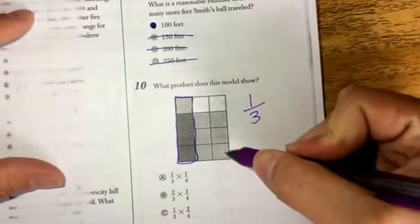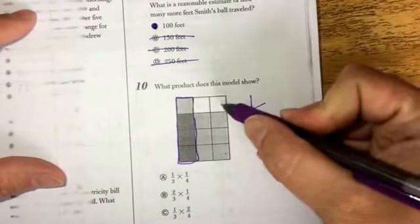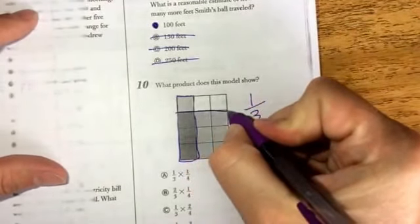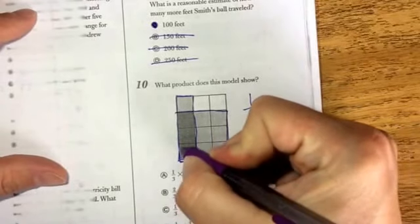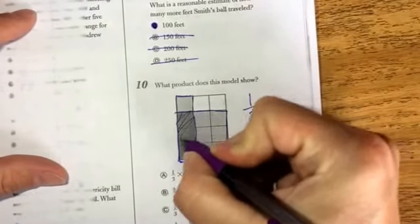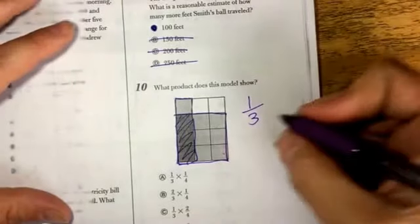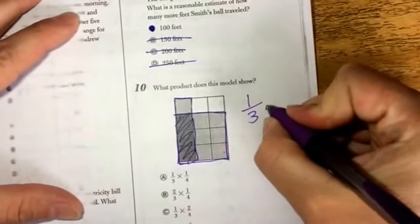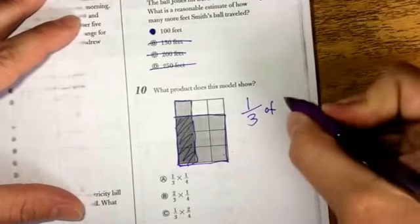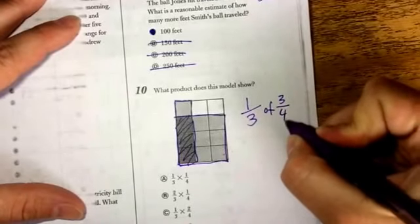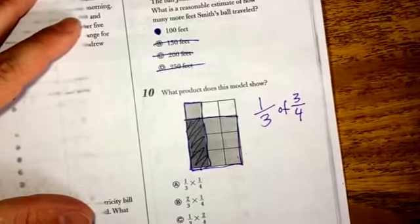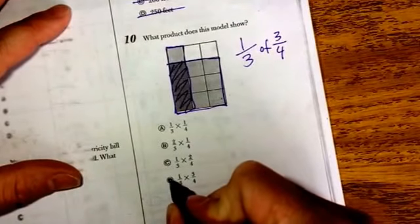And then I have 1, 2, 3 out of 1, 2, 3, 4 columns filled in there. And this is my overlap zone. And so that is showing me actually 1 third of 3 fourths or 1 third times 3 fourths. And that would be D here.